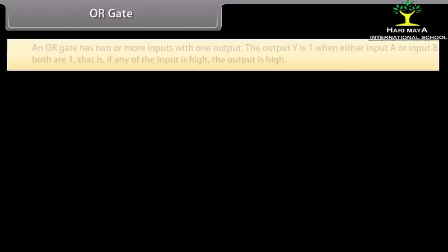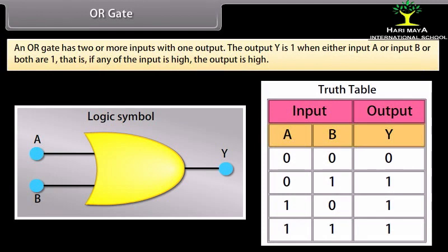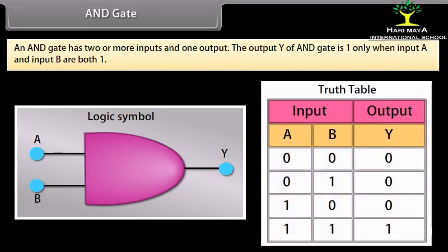OR gate: An OR gate has two or more inputs with one output. The output Y is 1 when either input A or input B, or both, are 1 — that is, if any input is high, the output is high. AND gate: An AND gate has two or more inputs and one output. The output Y is 1 only when both input A and input B are 1.